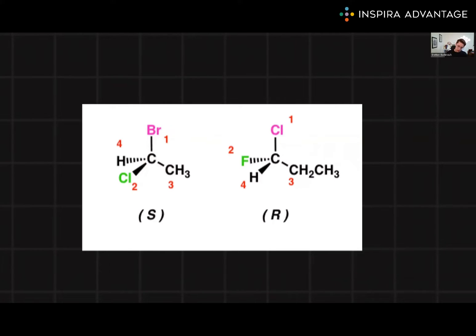Then we assign priority to the atoms directly attached to the stereocenter based on their atomic number. The higher the atomic number, the higher priority. So since bromine is the highest number, we put a one there. Chlorine is the second highest, we put a two. Carbon next, three. And hydrogen, very small, so it has our lowest priority. If we have tied atomic numbers, we would move along the chain until we find a point of difference.